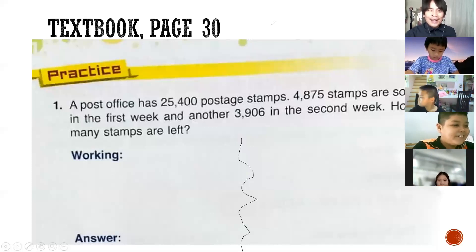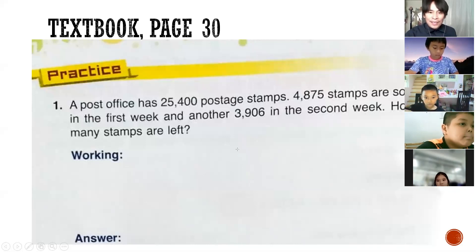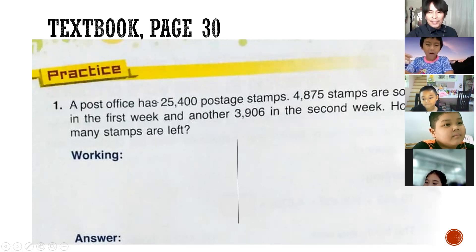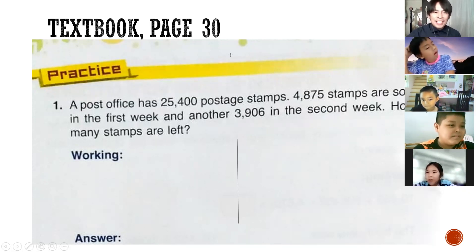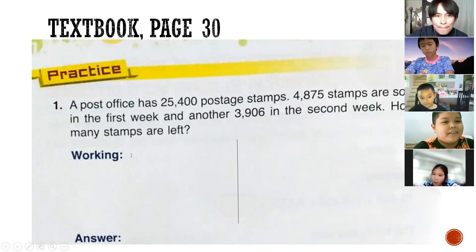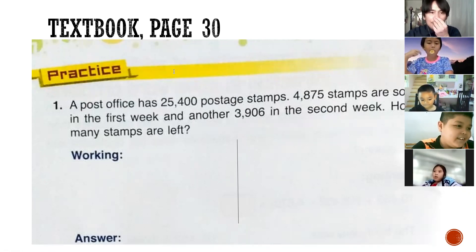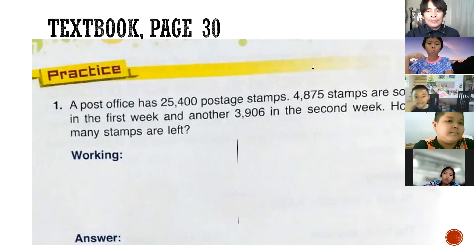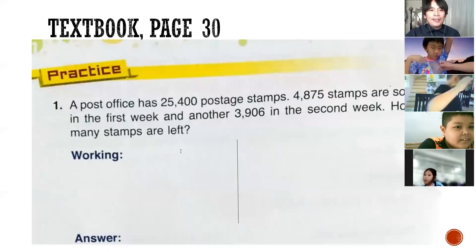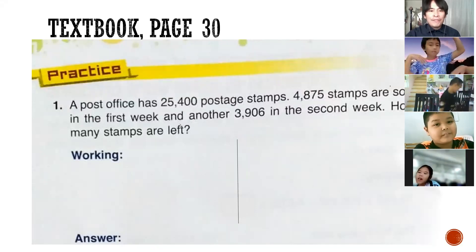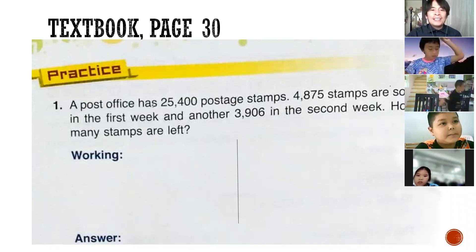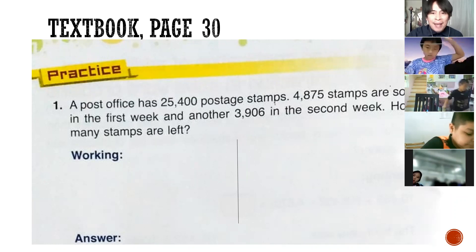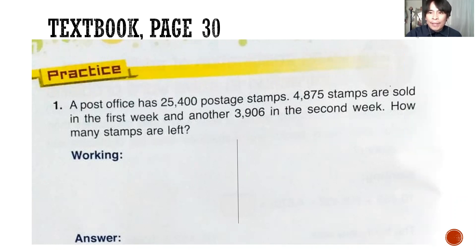If you have a ruler, you can do like this. So the working is the number sentence first. Can you keep quiet and listen to the teacher's explanation? Number one: A post office has 25,400 postage stamps. 4,800 stamps are sold in the first week. And another 3,906 in the second week. How many stamps are left?